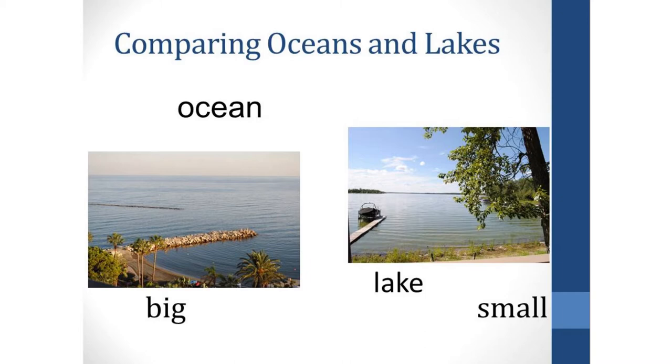So students at a level one level of proficiency are probably only going to be able to match pictures and words. So we have an ocean and a lake and we have visuals that we supply for those students and they would simply match ocean and lake and perhaps big and small.